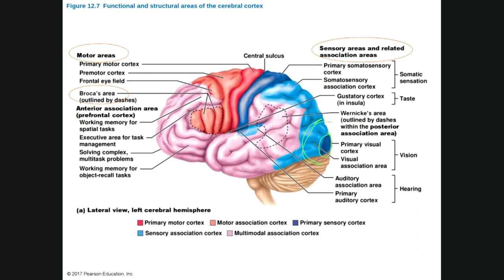The auditory/hearing area is present in the temporal lobe. These are the various cerebral cortex functions. For example, if the right occipital lobe is damaged, the patient gets hemianopsia — a condition where vision in half the visual field is lost. We will discuss optic nerve injuries in more detail later.